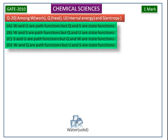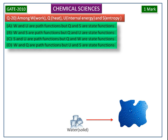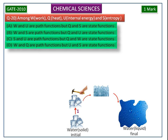Let us consider the conversion of water in solid phase to water in liquid phase. Solid state is the initial state and liquid state is the final state. Here I am showing this conversion by three ways, that is, three paths. First one is the hammering of the ice piece. Second one is the heating the ice pieces. Third one is the natural way.